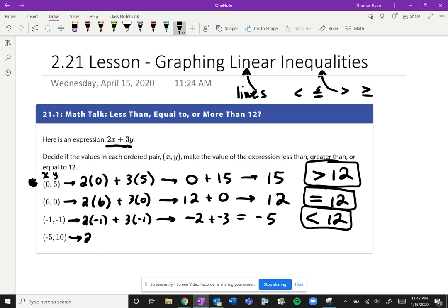If we do the last one, 2 times -5 plus 3 times 10—2 times -5 is -10, 3 times 10 is 30. We get 20, so once again that's greater than 12.